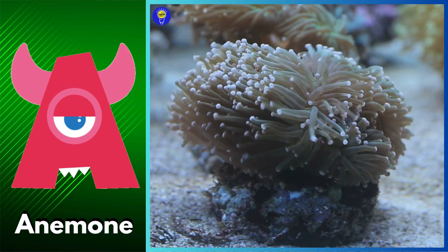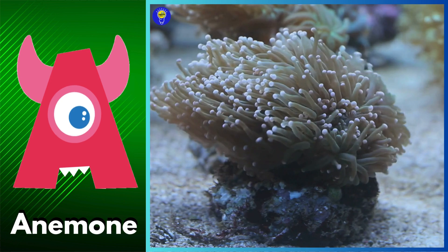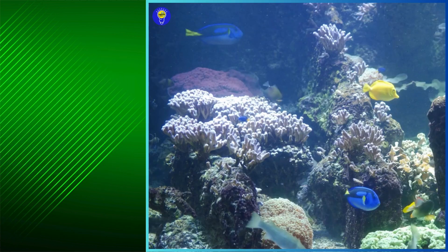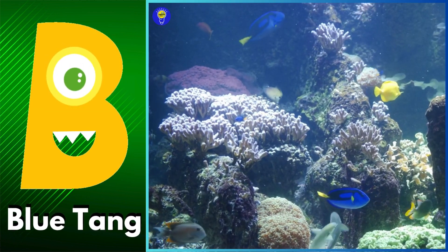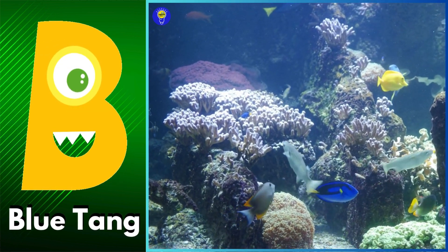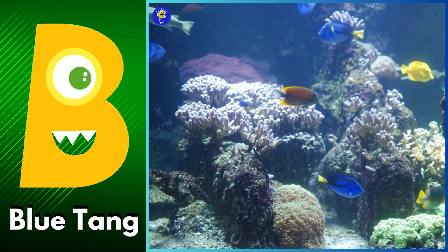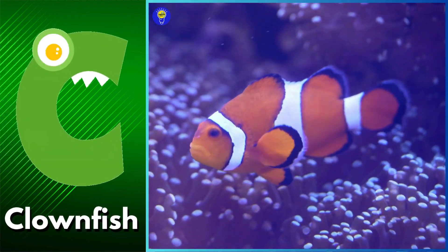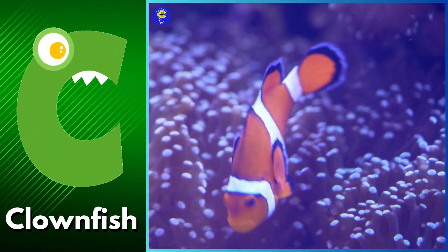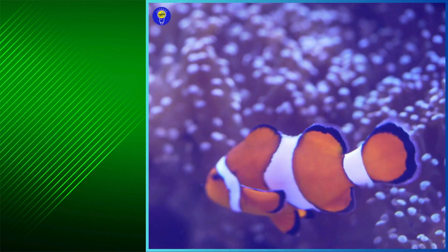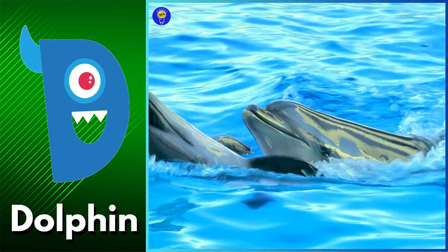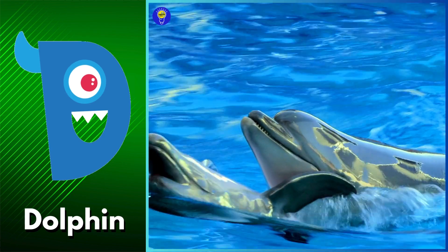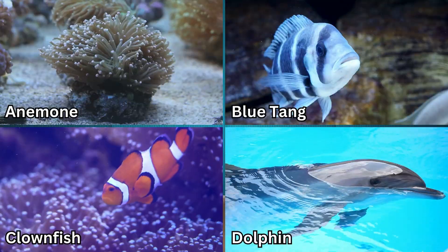A is for anemone. Anemone. B is for blue tang. Blue tang. C is for blowfish. Blowfish. D is for dolphin. Dolphin.